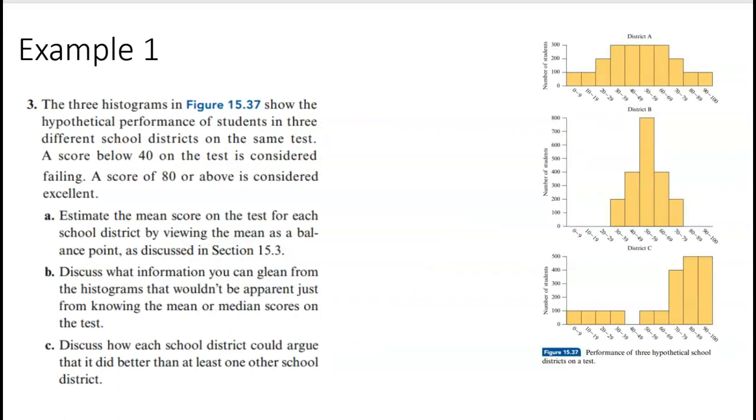Let's do an example here. The three histograms show the hypothetical performance of students in three different school districts on the exact same test. A score below 40 is considered failing, so below 40 is failing. Let's just kind of label what we've got here. And a score of 80 or above is considered excellent. So we'll just put a smiley face. 80 or above is considered excellent.